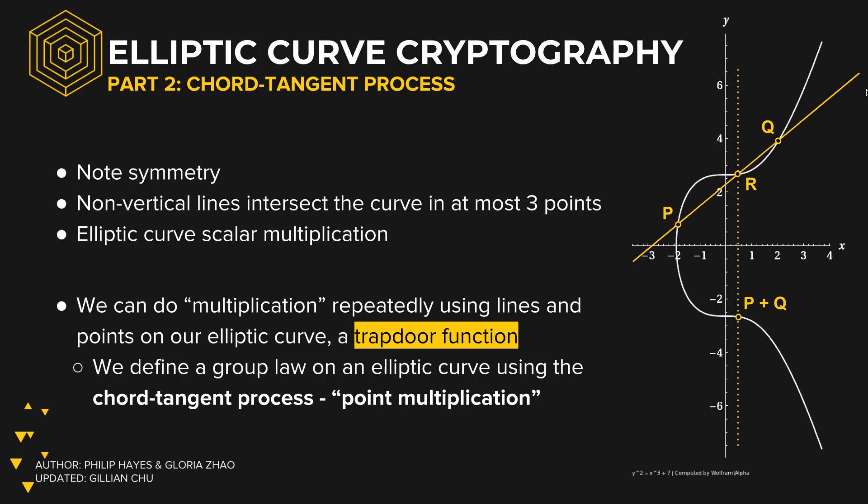Bitcoin's elliptic curve is SecP256K1. This curve is specified with a couple of parameters including the actual curve formula by its coefficients, the field, and a generator point. Note the symmetry of the curve across the x-axis. This symmetry is preserved even when taking it over a finite field.